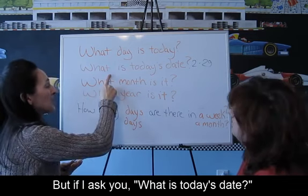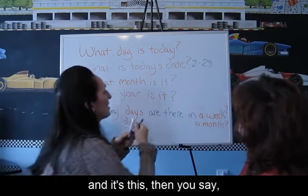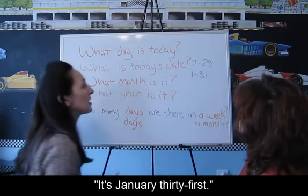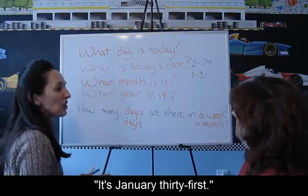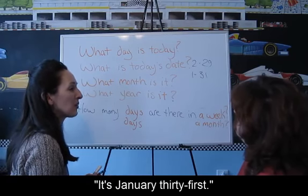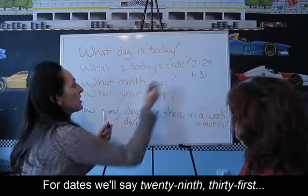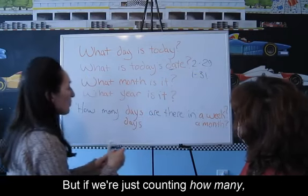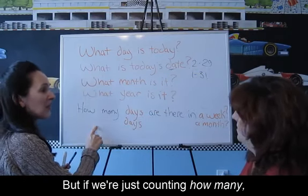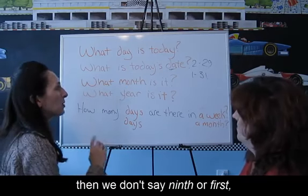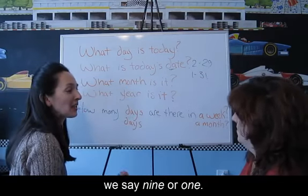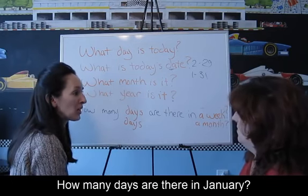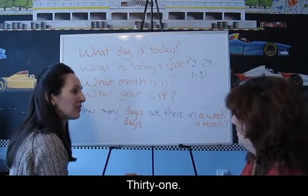But if I ask you, what is today's date? Then you say it's January 31st. So for dates, we say 29th, 31st. But if we're just counting — how many? — then we don't say 9th or 1st, we say 9 or 1. How many days are there in January? 31.